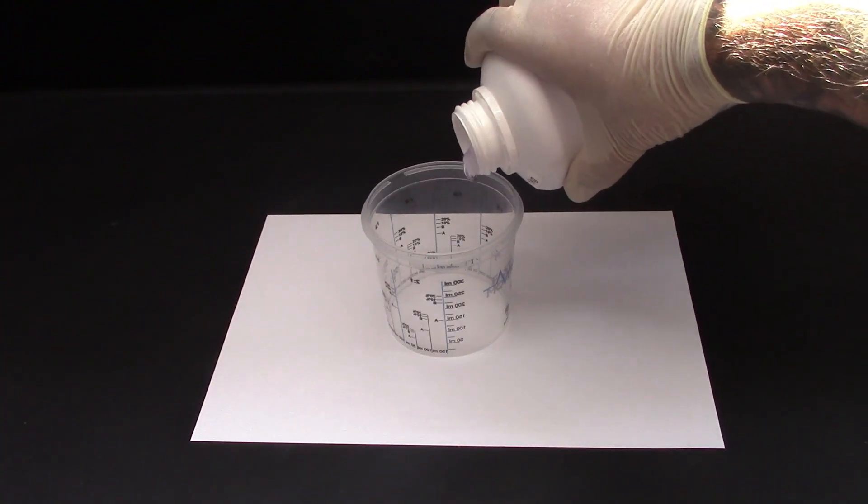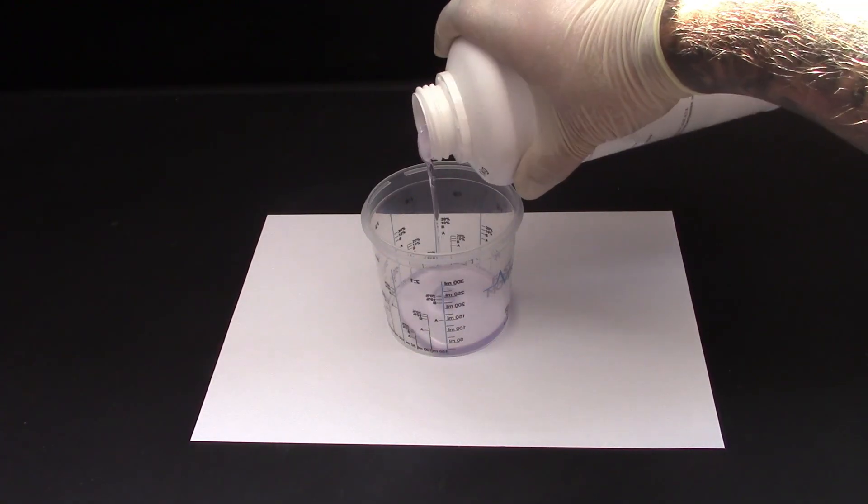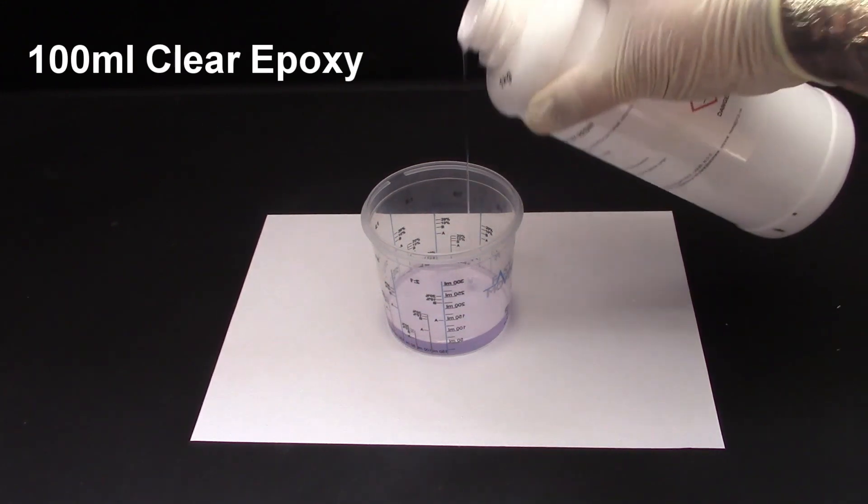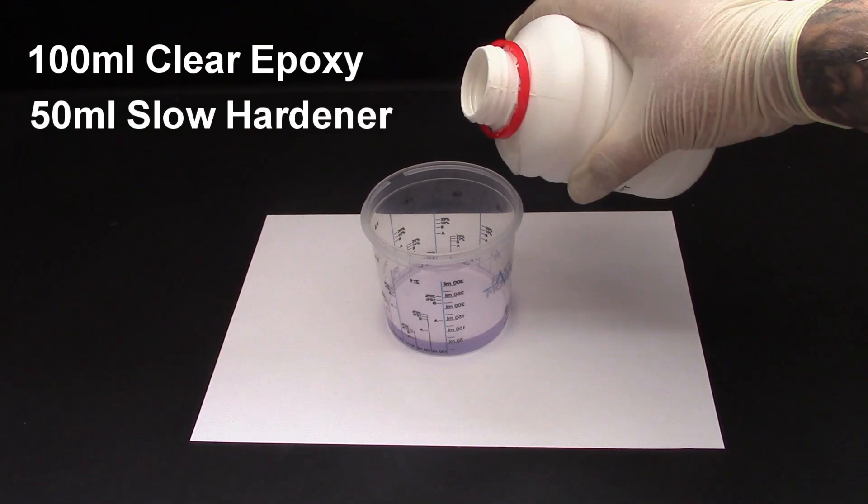First we measured out our required amount of clear epoxy resin and hardener. We're using 100 milliliters of ACF clear epoxy art resin with 50 mils of slow cure hardener.